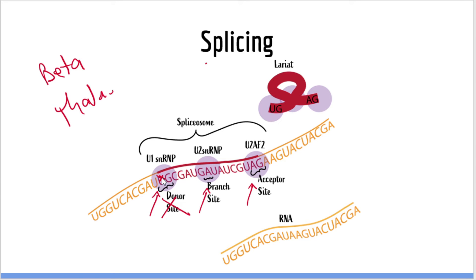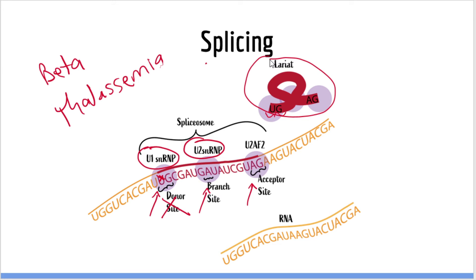Another concept you need to be familiar with is that there are specialized snRNAs called snRNPs that identify these sequences and remove the intron by cleaving the mRNA and rejoining the adjacent exons. snRNPs are a crucial component of the spliceosome. There are many different snRNPs and proteins in the spliceosome, but what you need to know is that snRNPs are a kind of snRNA responsible for splicing. Once the intron is removed, it is converted into a ring-like structure called a lariat, which is removed and degraded by enzymes and is not used in translation.